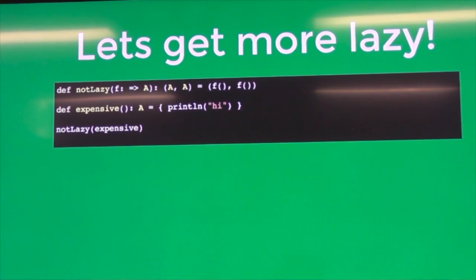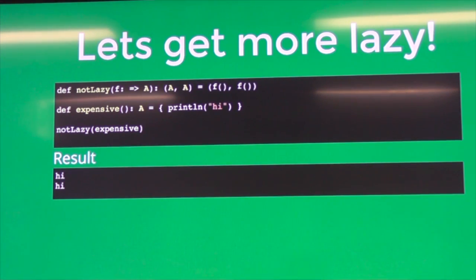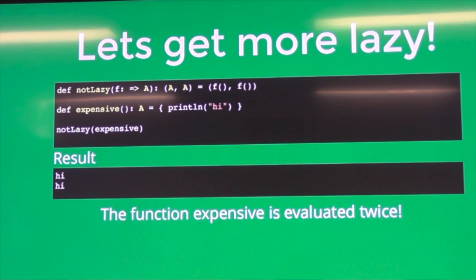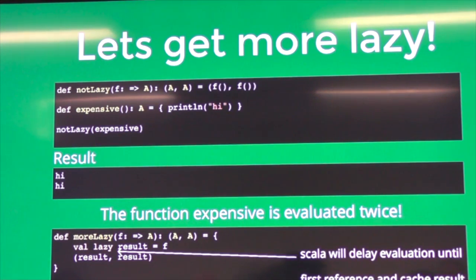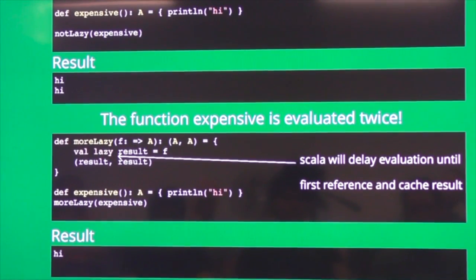Let's get even more lazy. We might have a function with a lazy kind of argument — this `notLazy` function. We have some other function `expensive` that we want to pass in. Expensive could do lots of things but in this case it's just going to print 'hi'. Because in our `notLazy` function it returns a tuple, it's going to evaluate that function twice, which is wasteful. We can use the keyword `lazy` to create a temporary variable, which means when we evaluate `moreLazy`, it just does it once. That's neat.